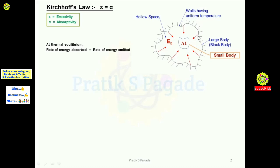When the small body and the large body reach thermal equilibrium, at this condition the rate of energy absorbed and the rate of energy emitted are equal. That is, when this large body and small body reach thermal equilibrium, the rate of energy absorbed by the small body is equal to the rate of energy emitted by the small body. So now, for body A1: